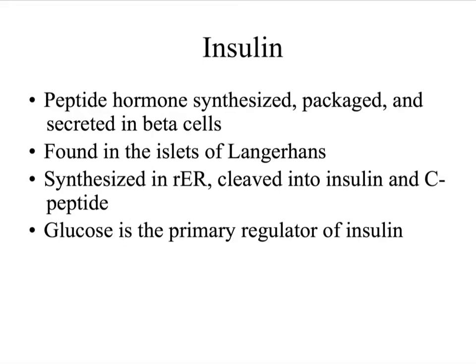Insulin is a peptide hormone, meaning that it is made up of amino acids and is synthesized, packaged, and secreted from beta cells, which are found in islets of Langerhans in the pancreas. Insulin is synthesized in the rough endoplasmic reticulum and is known as pro-insulin before it is cleaved into insulin and C-peptide at a one-to-one ratio.